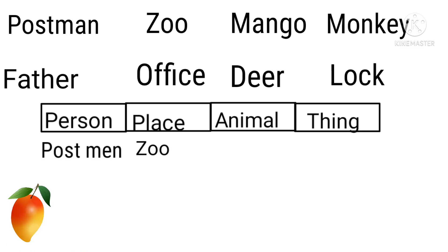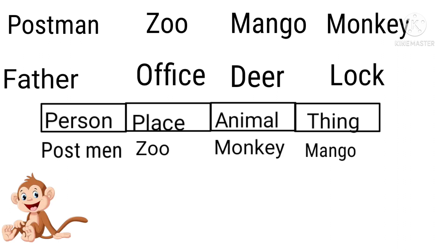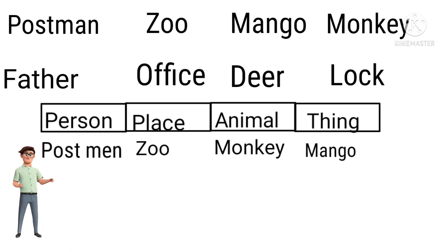Next comes mango. Mango is a thing, so we will place it under thing. Next, monkey — monkey is an animal, so we will place it under animal. Next word is father. Father is a person, so we will write it under person.